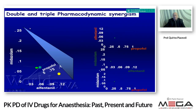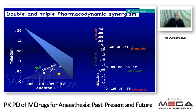Here we have double and triple pharmacokinetic and pharmacodynamic synergies, represented by alfentanil, midazolam, and propofol — the third one — at different concentrations. We can see how the dosage of the three drugs changes, related to the effects we want to keep in our patients — whether we want deep sedation or to suppress more pain.